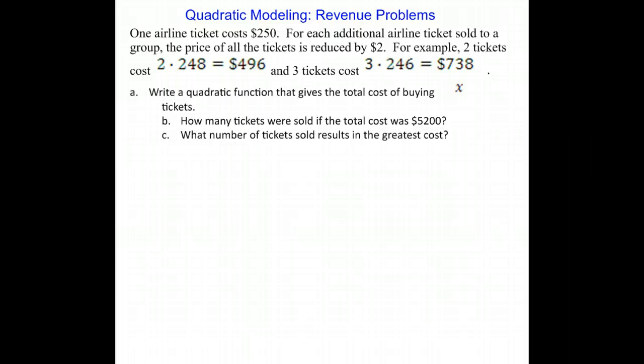create a quadratic model that gives the total cost of buying X tickets. Then we will use that model to find out how many tickets were sold if the total cost was $5,200.